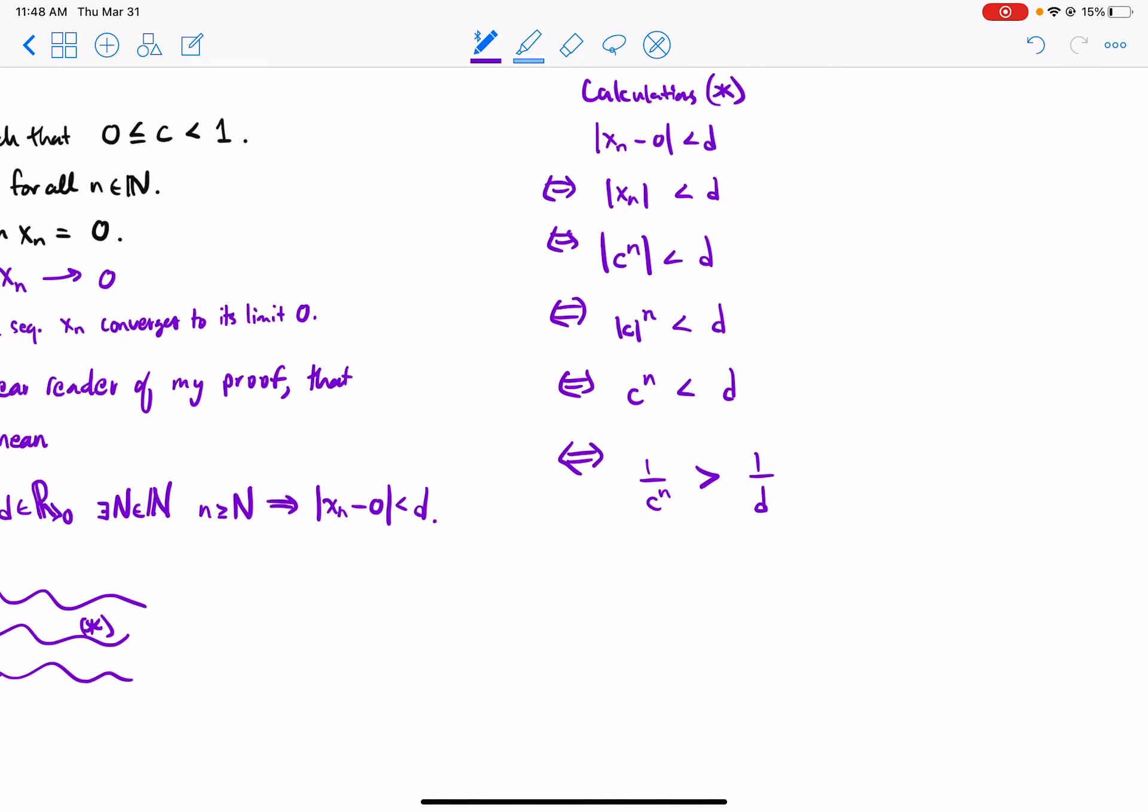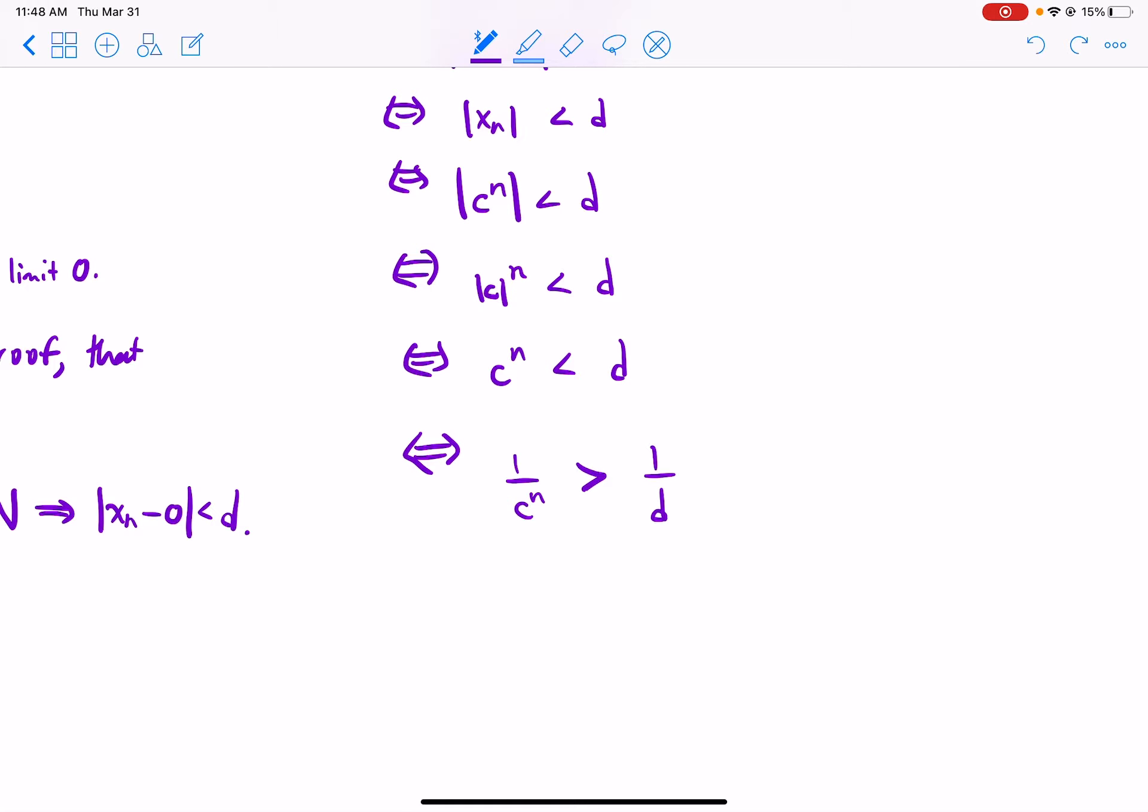This is true if and only if 1 over c to the n is greater than 1 over d. Now, why is that an if and only if? Well, because c to the n and d are both positive. So maybe I'll say because for any numbers a and b that are positive numbers, a less than b is true if and only if 1 over a is greater than 1 over b. Let's see an example of that. 2 is less than 5. 1 half is greater than 1 fifth. Okay, let's take 1 third is less than 2 thirds. That's true. 3 is greater than 3 halves. That's true.